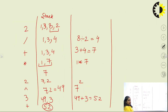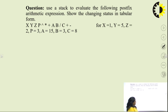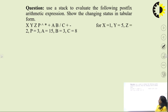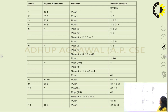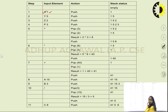Next example: evaluate postfix expression 'X Y Z P ^ * + A B / C + -' using a stack and tabular form, with given values X=1, Y=5, Z=2, P=3, A=50, B=15, C=8. Push X=1, push Y=5, push Z=2, push P=3 — stack is [1, 5, 2, 3]. On '^': pop Z=2 and P=3, compute 2^3 = 8 — stack is [1, 5, 8].